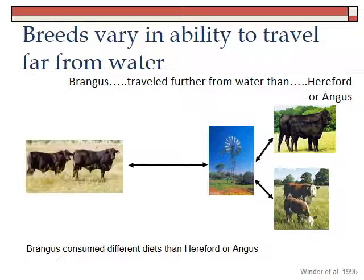Brangus cattle — a cross of Angus and Brahma — had the genetic ability to travel far from water. They could store water and travel far, so those animals were found in different parts of the landscape based on distance from water. This yielded a situation where Brangus actually consumed different foods than the Herefords and Angus, simply because there were different plants available far from water versus close to water.